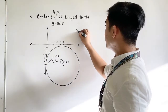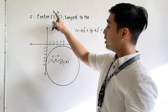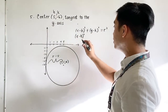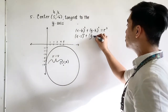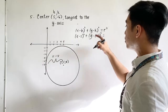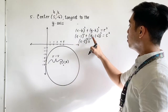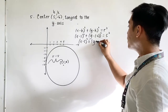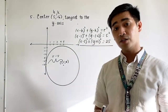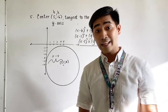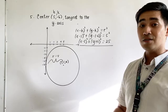The standard equation is x minus h quantity squared plus y minus k quantity squared is equal to r squared. Substituting the values: x minus 5 quantity squared plus y minus negative 6 quantity squared is equal to r squared. r is equal to 5, that becomes 5 squared. Simplifying, x minus 5 quantity squared plus y plus 6 quantity squared is equal to 25. Therefore, the standard equation of the circle having center at 5 and negative 6 and tangent to the y-axis is (x − 5)² + (y + 6)² = 25.